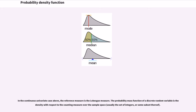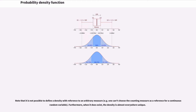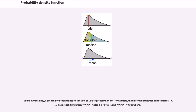The probability mass function of a discrete random variable is the density with respect to the counting measure over the sample space. Note that it is not possible to define a density with reference to an arbitrary measure. Furthermore, when it does exist, the density is almost everywhere unique. Unlike a probability, a probability density function can take on values greater than 1.